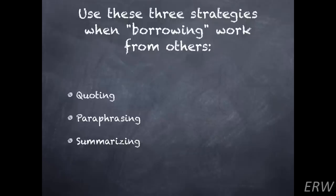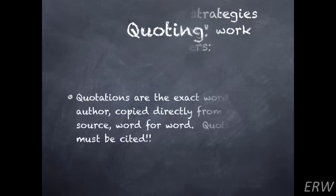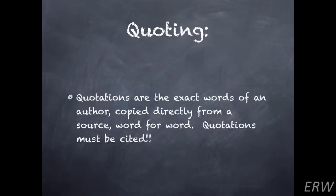When borrowing from other people's work — and I really do want you to use other people's ideas — the key is to give credit properly. Three strategies you can use are quoting, paraphrasing, and summarizing. Quotations are the exact words of an author copied directly from a source, word for word, and quotations must be cited. The exact words are inside quotation marks, and at the end of a quotation you need brackets giving credit to who came up with those original words or ideas.